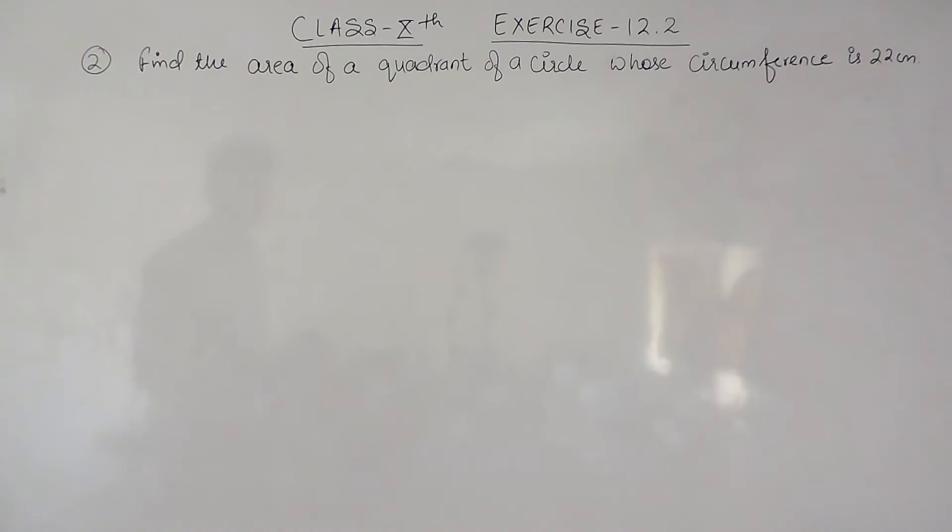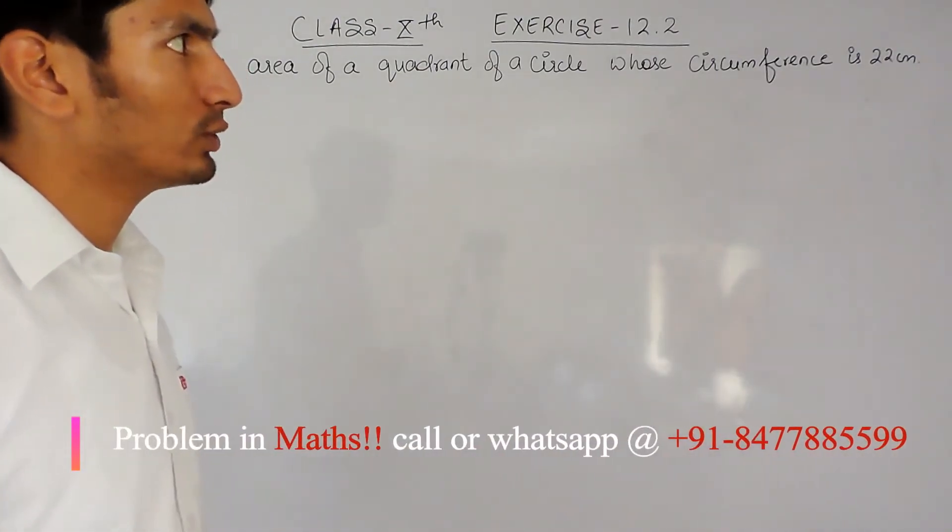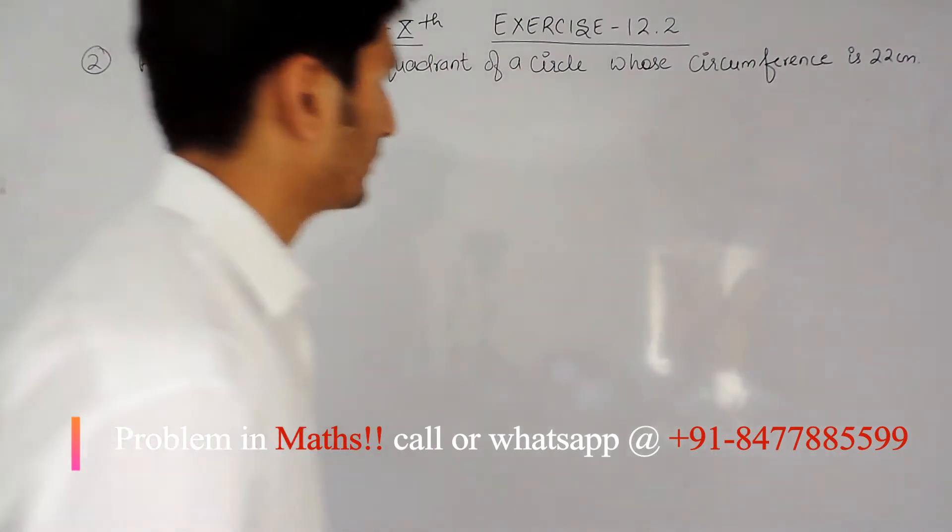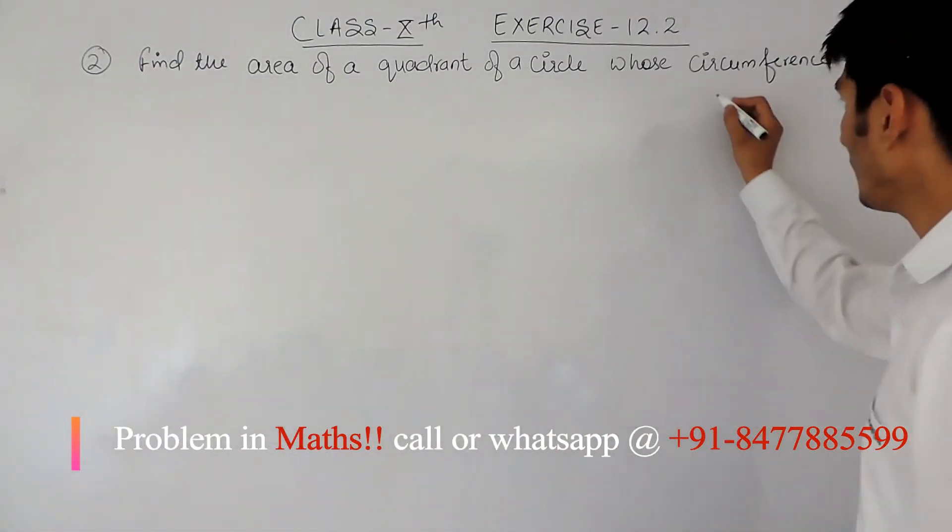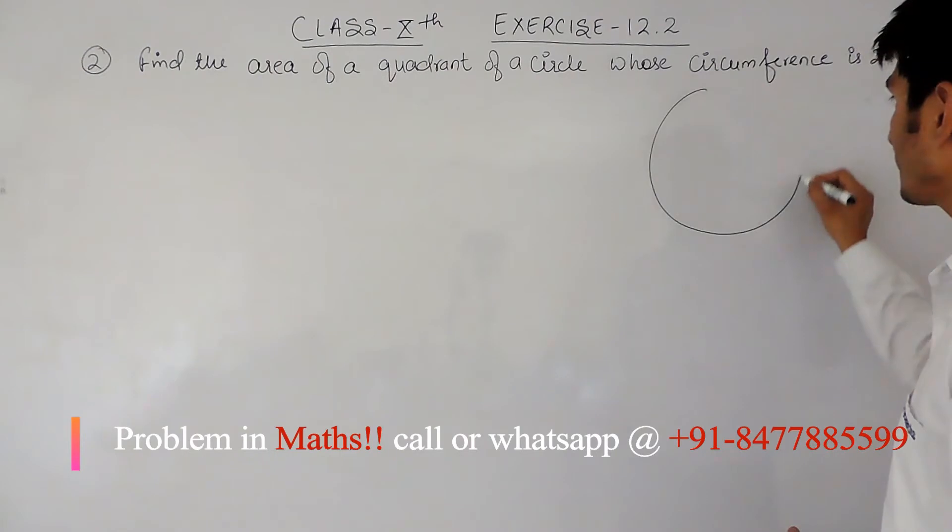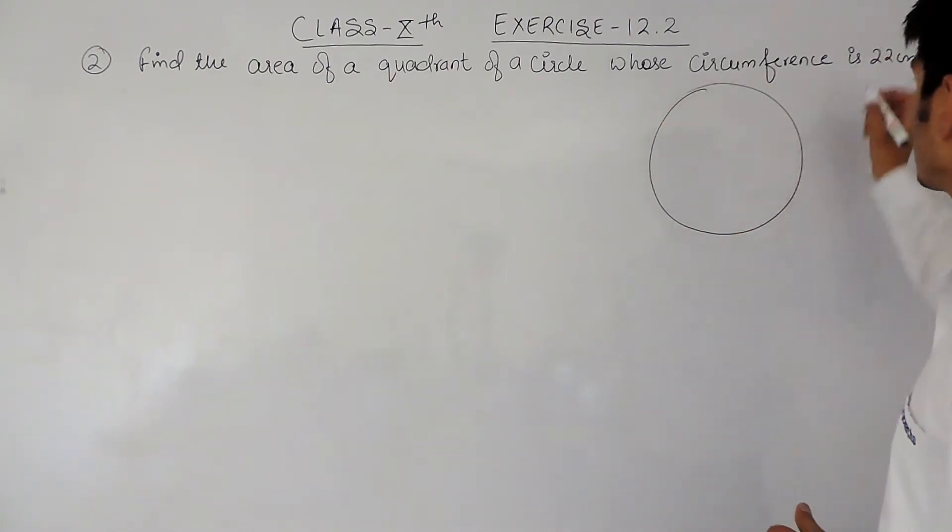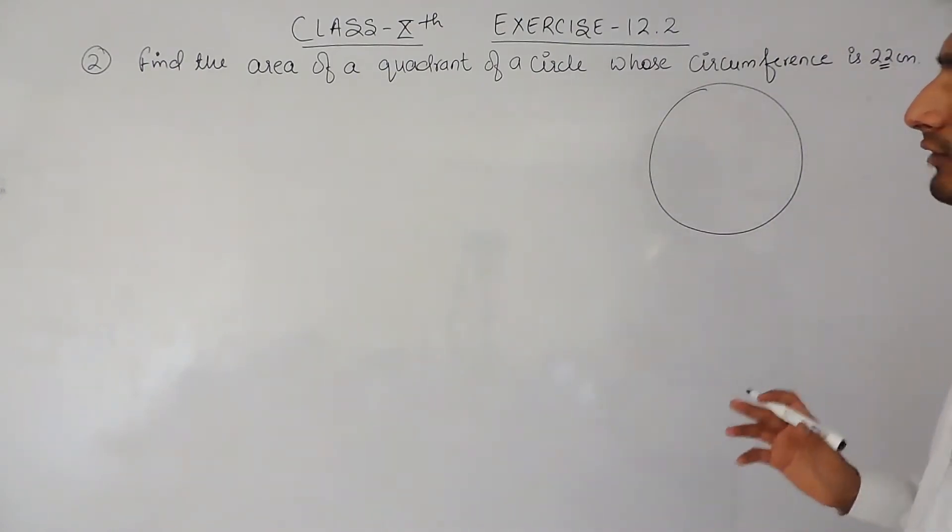The question says: find the area of a quadrant of a circle whose circumference is 22 centimeters. So here a circle is given to us whose circumference is given to us as 22 centimeters.